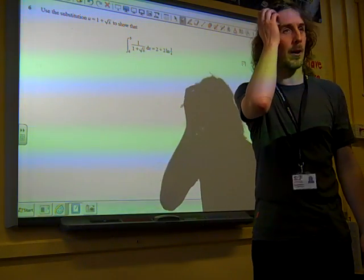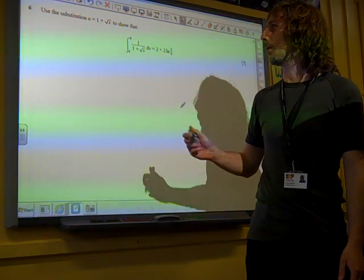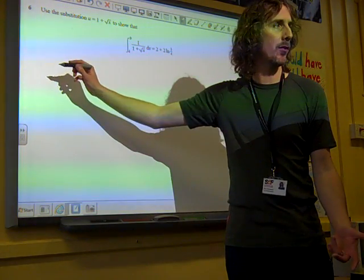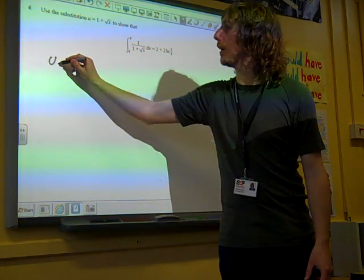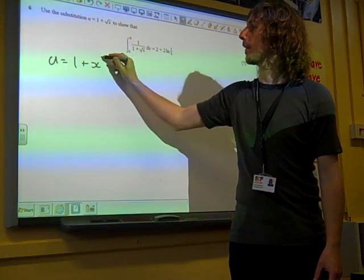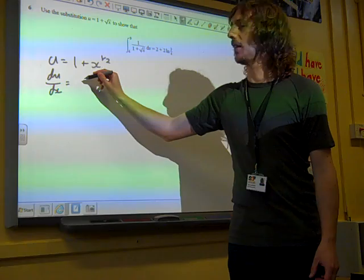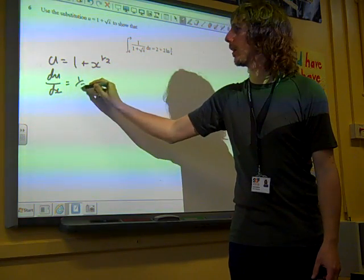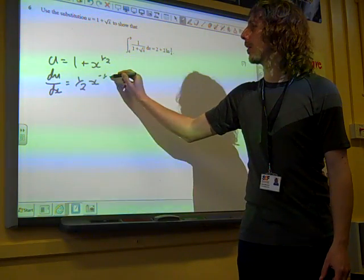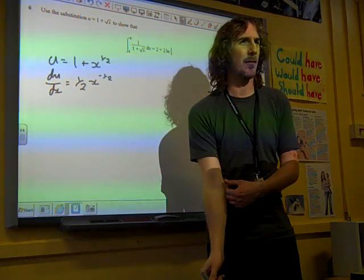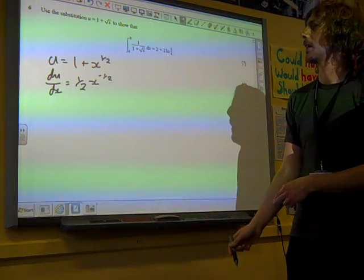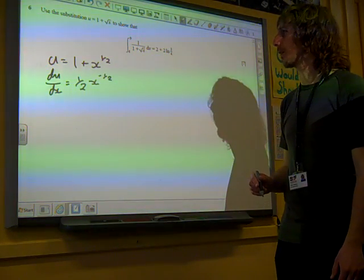So let's try and work out how the substitution is going to work out to start with. We know that we need to know what du by dx is. So if u is 1 plus x to the half, du by dx is a half x to the minus a half.